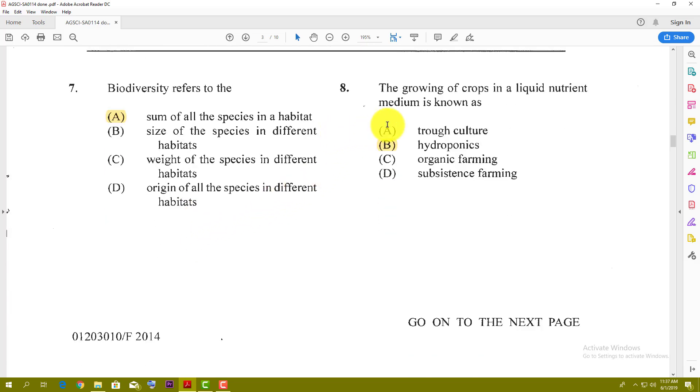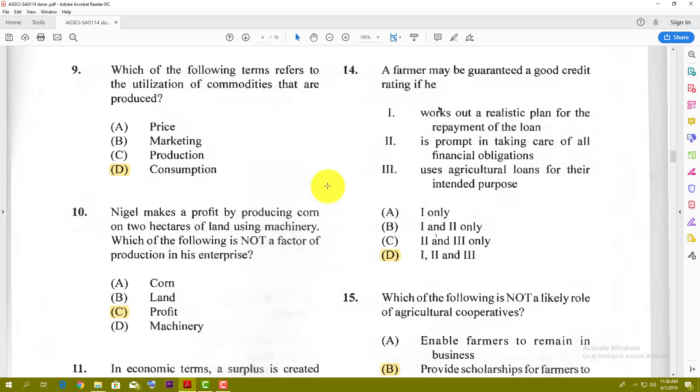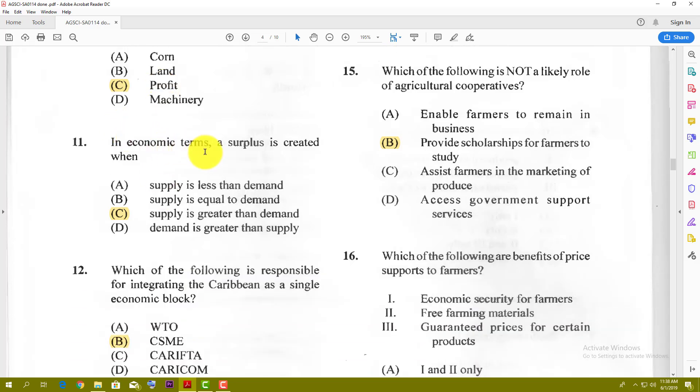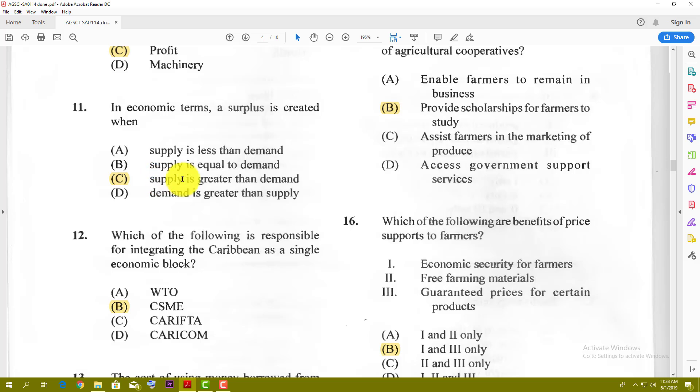Number 8: The growing of crops in a liquid nutrient medium is known as hydroponics. Number 9: Which of the following terms refer to the utilization of commodities that are produced? The answer is consumption. Consumption is when you utilize something. Number 10: Nigel makes a profit by producing corn on 2 hectares of land using machinery. Which of the following is not a factor of production in his enterprise? The answer is profit. Profit is the reward for the factor of production management or entrepreneurship, so profit is not a factor of production. Number 11: In economic terms a surplus is created when supply is greater than demand.